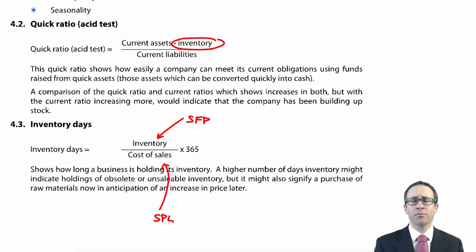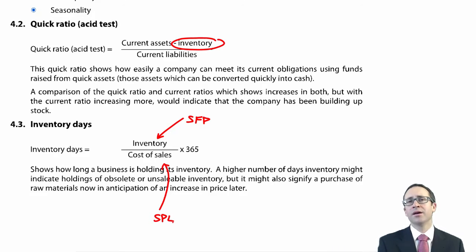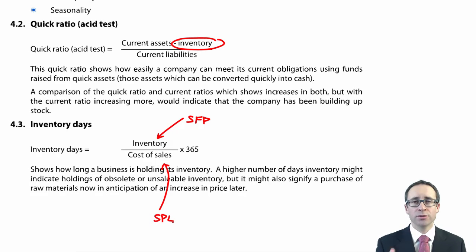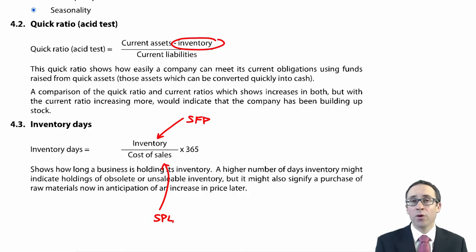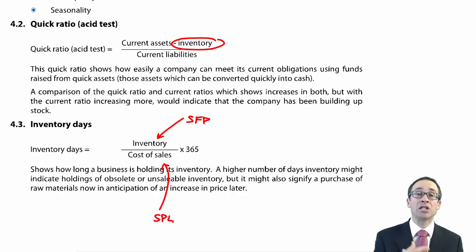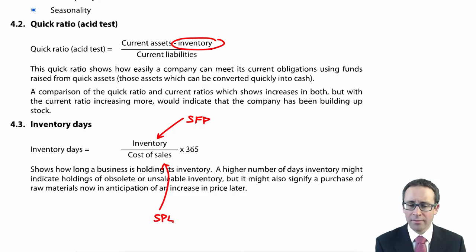If there is an increase in the number of days, you are holding inventory for longer, which brings the risk of additional holding costs and obsolescence, reducing profitability. If there is a reduction in inventory days, that could mean you are selling inventory more quickly — perhaps by offering discounts — or that you purchased goods at a cheaper price.